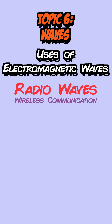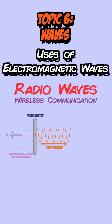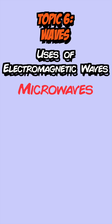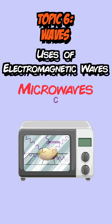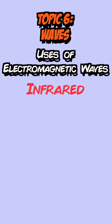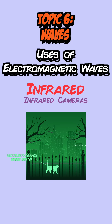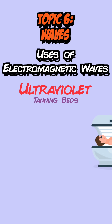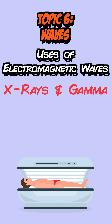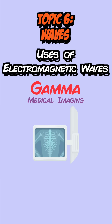Radio waves are used in wireless communication — a transmitter with alternating current causes electrons to oscillate and generate radio waves at the same frequency as the AC. A receiver absorbs them and creates an alternating current again. Microwaves are used in satellite communication and cooking. Infrared is used in heaters and cameras. Visible light is used in fiber optic communication. Ultraviolet is used in tanning beds and energy-efficient lamps. X-rays and gamma rays are used in medical imaging, and gamma rays are also used for cancer treatment.